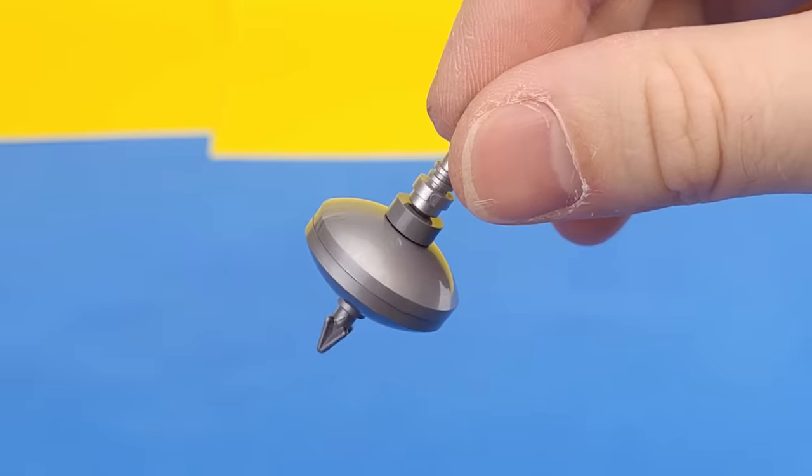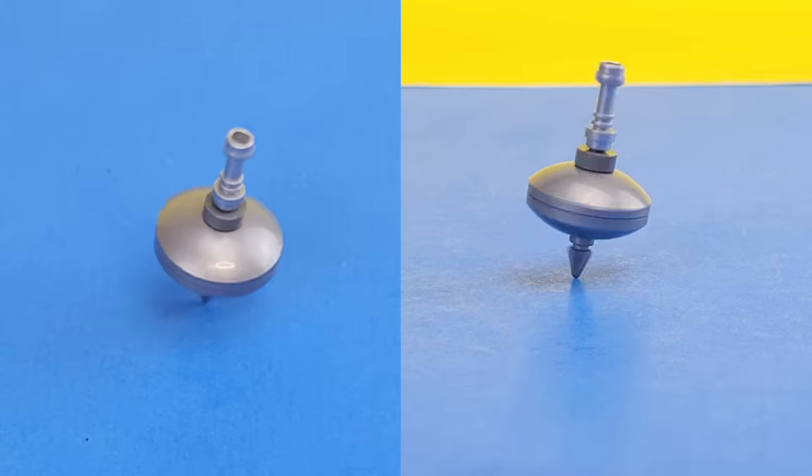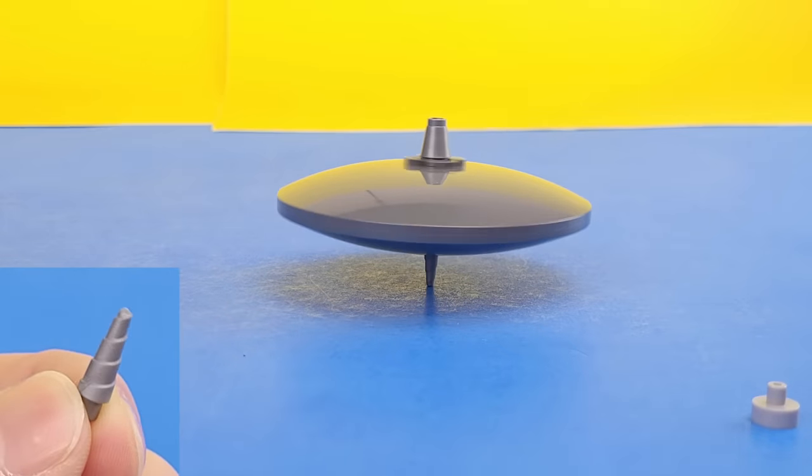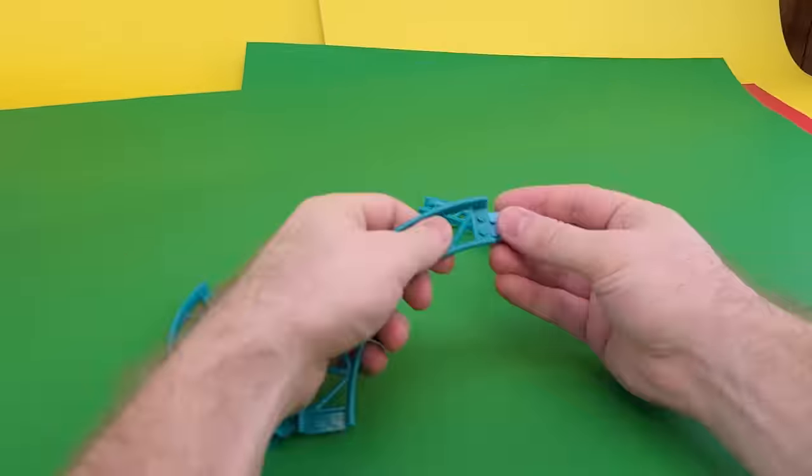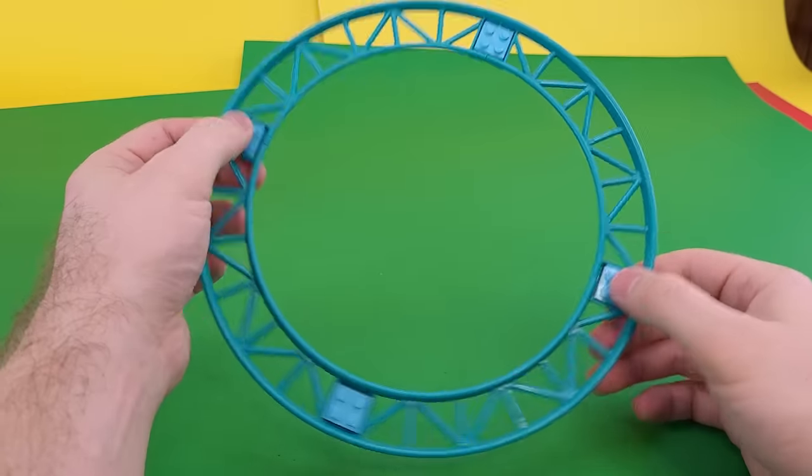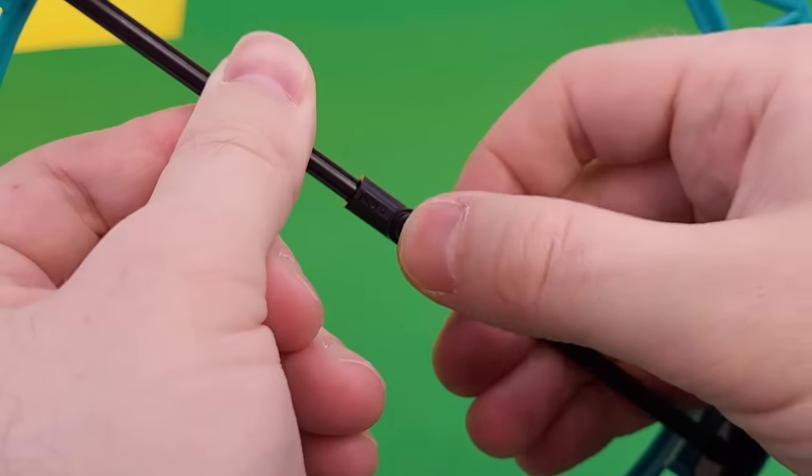Then I built a few more, like this super small one that spins on top of this spike piece, and this bigger one is using this piece that LEGO has used as a drill bit and a unicorn horn. But I wanted to push things even further, so I used these roller coaster pieces to make a giant top that would spin on this really tiny Technic piece.